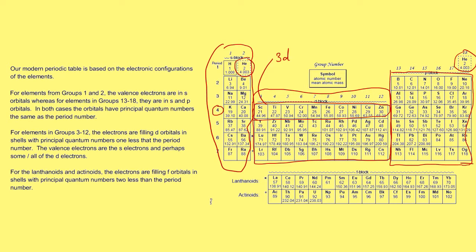Going down lastly to the lanthanoids and actinoids — the lanthanoids fit in here, and the principal quantum number is six minus four for them. So all the lanthanoids are filling in the f subshell. Six minus two is four, so they are filling in the 4f subshell.